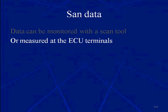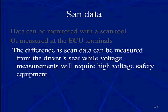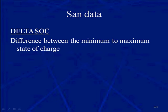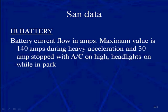Data can be monitored on a scan tool or measured at the ECU terminals. The difference is scan data can be measured from the driver's seat, while voltage measurements require high voltage safety equipment and gloves. Some examples in scan data include delta state of charge, the difference between the minimum and maximum state of charge, and the battery current — IB battery — the battery current flow in amps.